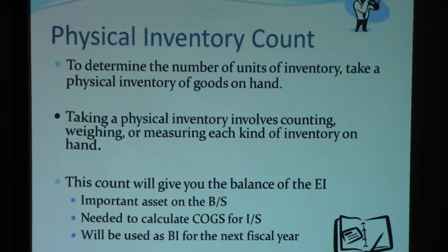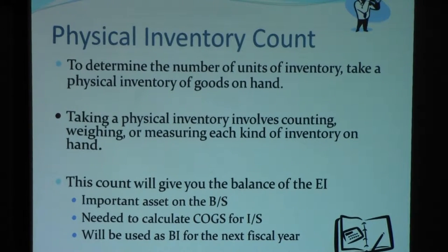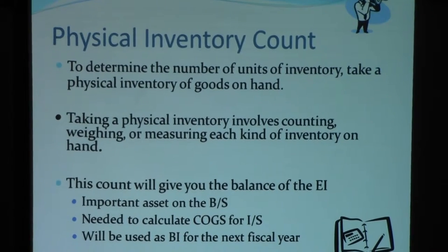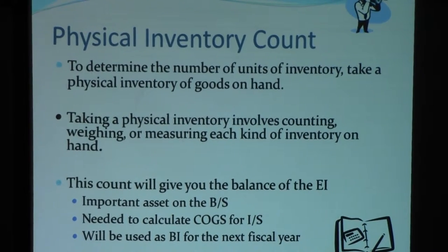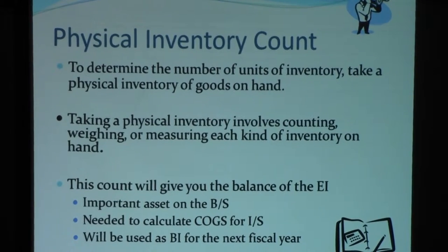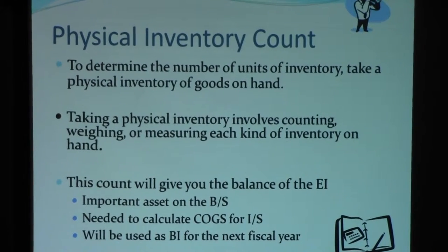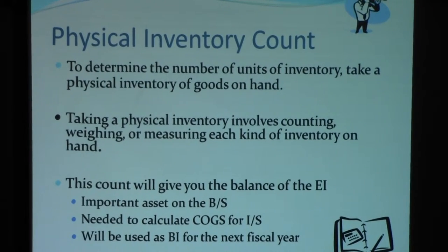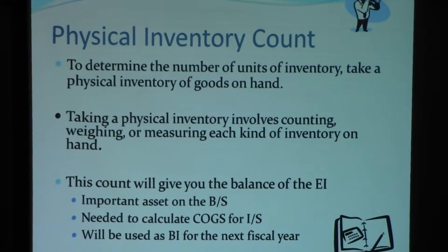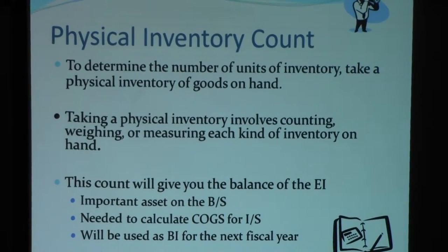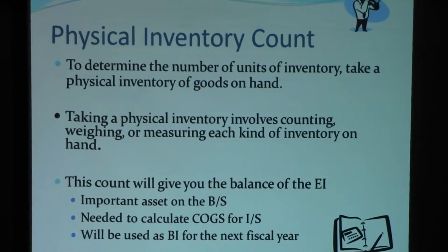Once the count is finished, it should give you the ending balance for ending inventory, which is an extremely important asset on the balance sheet. It's also needed to calculate cost of goods sold, which in turn is needed for the income statement. We also need this ending balance to become the beginning inventory for the next year's inventory account. We try to physically count this on the last day of the fiscal year — so if your fiscal year ends on December 31, you would count it on December 31.